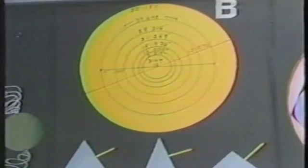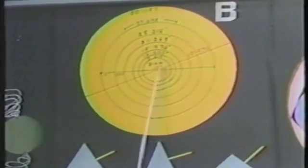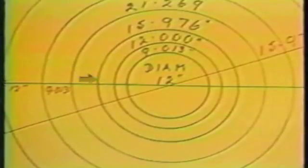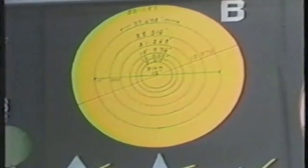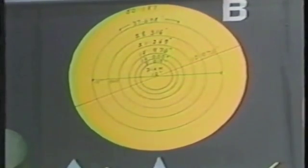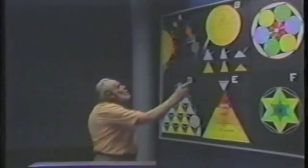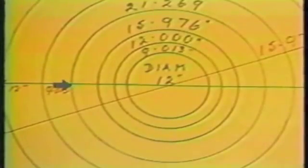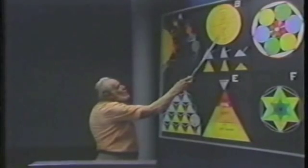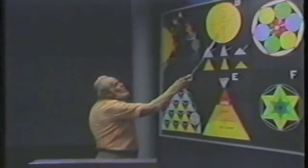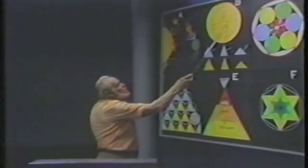And if you measure the circumference of this one here and multiply it by the cube root of pi, then this is the circumference of this one. If you take the circumference of this one and multiply it by the cube root of pi, it is the same measurement as this one.